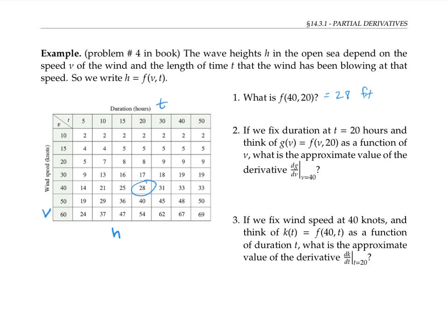Fixing the duration at 20 hours means we're reading down this column. So we want the rate of change of the numbers in this column as v varies. So for example, we can look at these two numbers and look at Δg/Δv, which is (40 minus 28) over (50 minus 40), where the 50 minus 40 comes from the change in v.